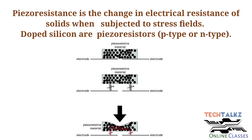Normally, doped silicon piezo resistors are used in micro-sensors and micro-actuators. For p-type silicon crystal, we use silicon with boron. For n-type silicon crystal, we add arsenic and phosphorous.